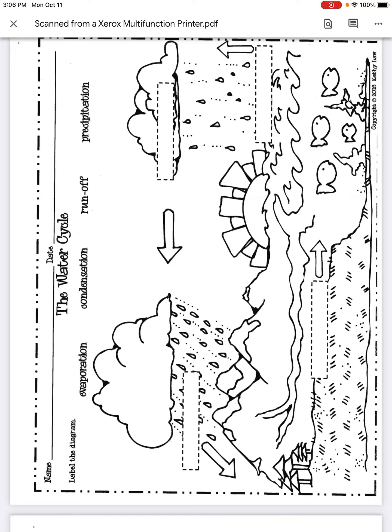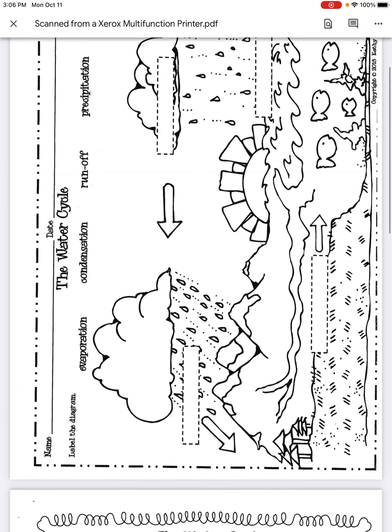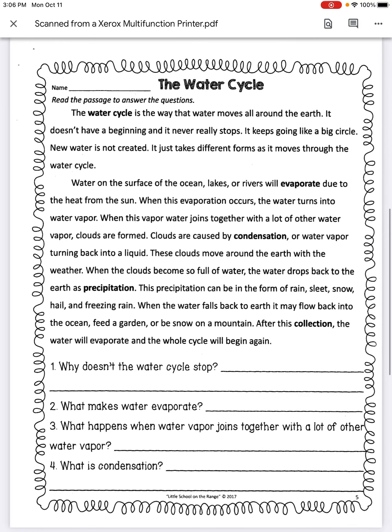Today you are going to learn about the water cycle. On the first page you will see a diagram and you are going to label the four steps. If you would like to color, you are more than welcome to. On the second page you will see a passage. I will read you the passage and the questions, and then you can answer on your own.